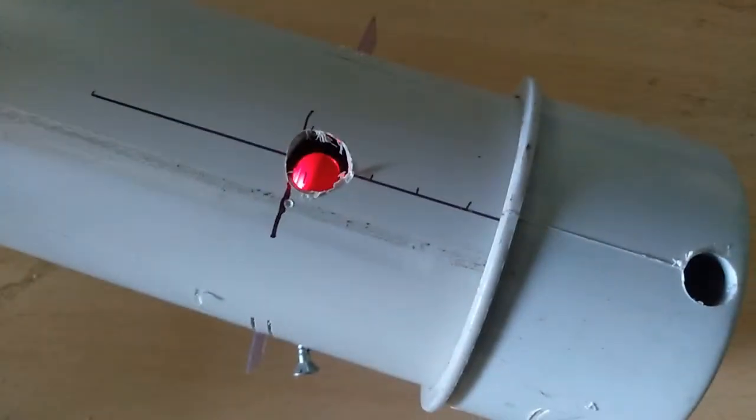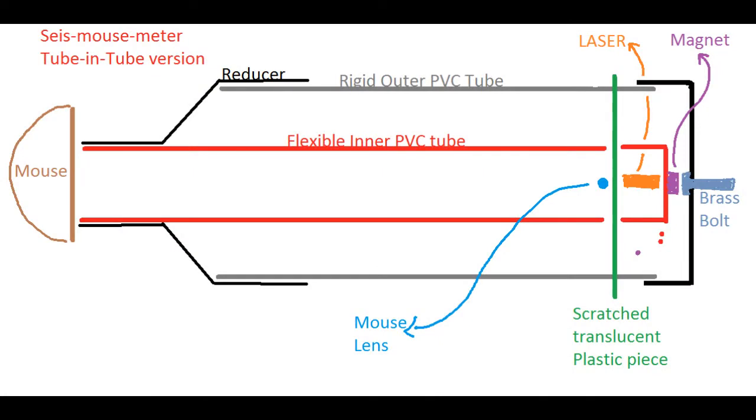This is the overall schematic of the seismometer, the one which has been shown here. It's a shortened version, not to scale. There's an inner tube which is colored in red and there's an outer PVC tube which is in gray and black. The red tube is held rigidly on the left side of the reducer which also holds the outer PVC tube.